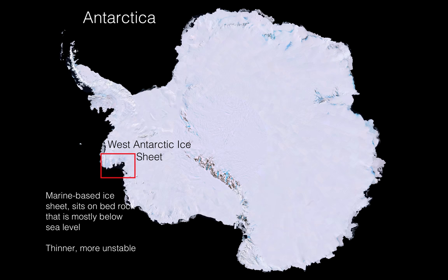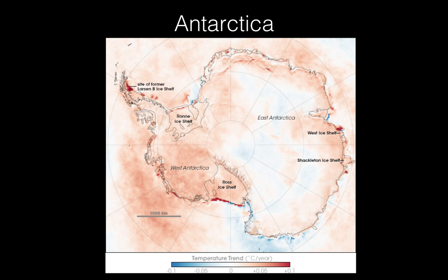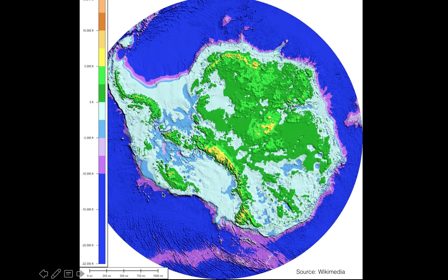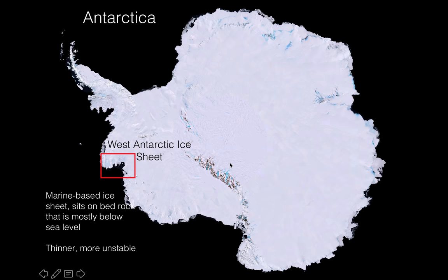You can see the warming trend here — the darker red indicates areas increasing in temperature. The trend in this red area is about 0.1 degrees Celsius per year. The West Antarctic Ice Sheet is warming at a much faster rate than most of East Antarctica, and we also see more warming around the edges of the ice sheets.